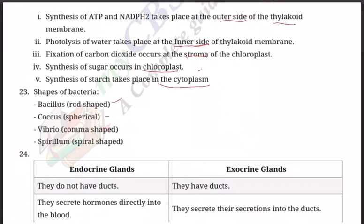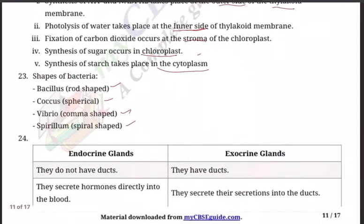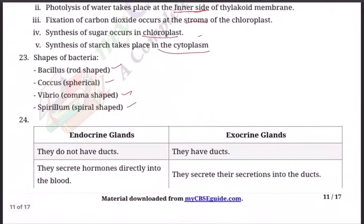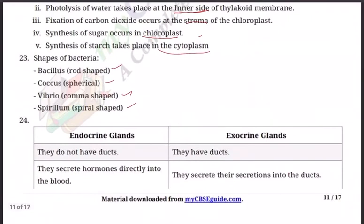Question 23: What are the four basic shapes of bacteria? This is a memory-based, knowledge-based question. Bacillus — rod-shaped. Coccus — spherical. Vibrio — comma-shaped. And Spirillum — spiral-shaped. These are the four shapes of bacteria.